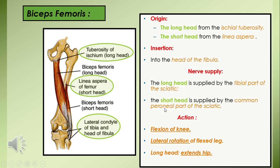The long head of biceps femoris is supplied, with the other hamstrings, by the tibial part of the sciatic nerve, while the short head is an exception and is supplied by the common fibular part of the sciatic nerve. The actions of biceps femoris include extension of the hip and, when the hip joint is fixed, flexion of the knee. As this muscle travels from the back toward the lateral aspect, its contraction can also cause lateral rotation of the tibia or leg.